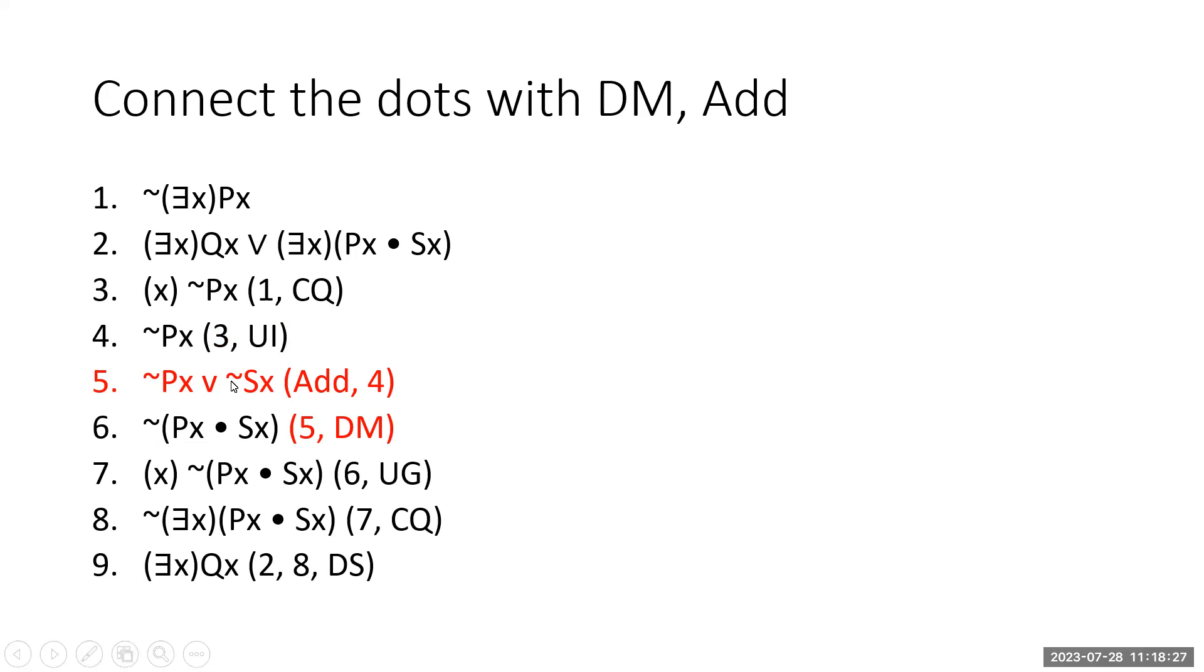We can use addition on line four to say it's not the case that the X is P, or it's not the case that X is S. And then we use DeMorgan's in order to derive that next line, that last line that we needed. And that is, it's not the case that X is P and X is S. And at that point, we've connected the dots.